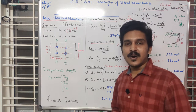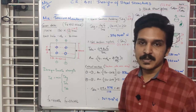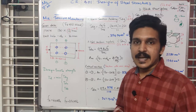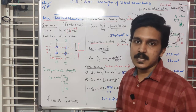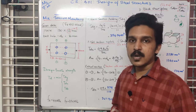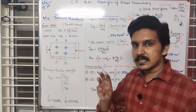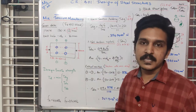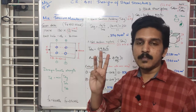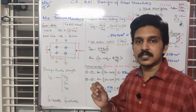In the last video on design of steel structures, we discussed how to design a tension member and the codal provisions involved. In this video, I will take up one question so you can familiarize yourself with the different steps and how to substitute values into the equations. There are three major failure conditions in a tension member: gross section yielding, net section rupture, and block shear failure. The minimum of these three gives the design tension capacity.